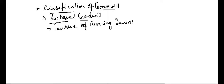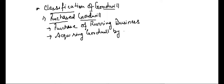I am purchasing a running business — a business that is already in the market and that is earning a good reputation, that is having good goodwill in the market. I am acquiring goodwill by making payment. So I am purchasing a running business which is having a good reputation, which means I am purchasing his reputation also by making payment to him.